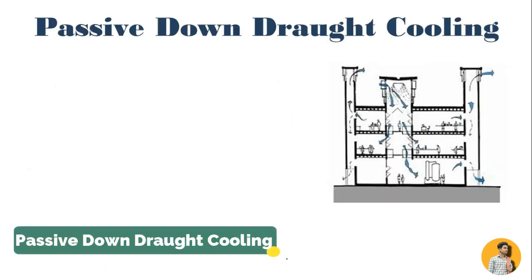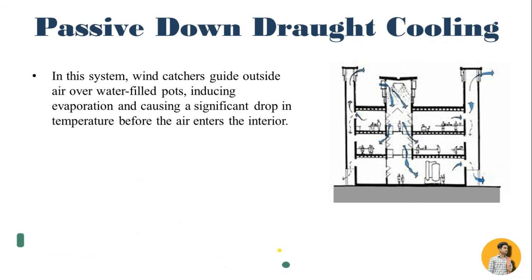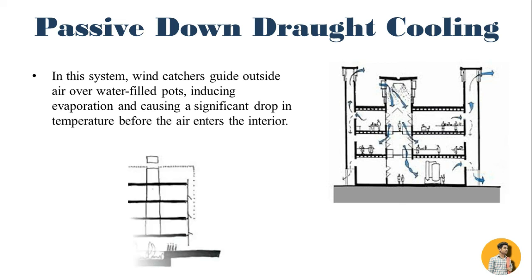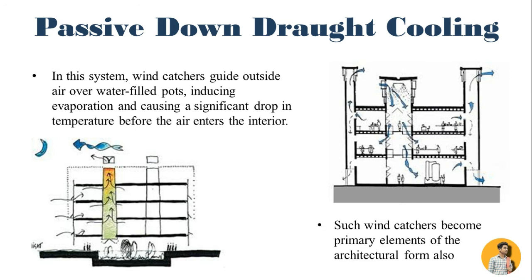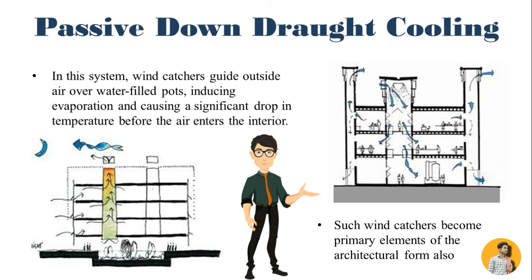Passive downdraft cooling: in this system, wind catchers guide outside air over water-filled pads, inducing evaporation and causing a significant drop in temperature before the air enters the interior. Such wind catchers become a primary element of the architectural form as well as its function.